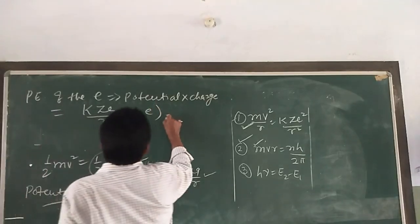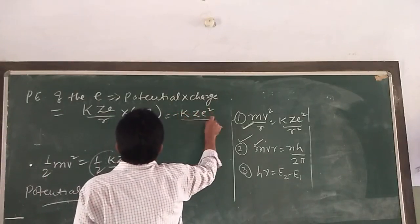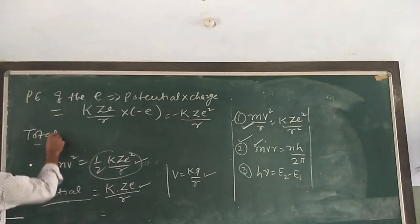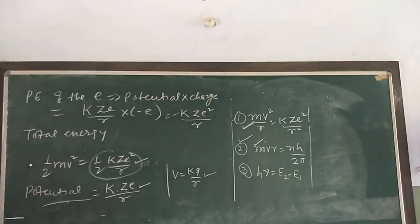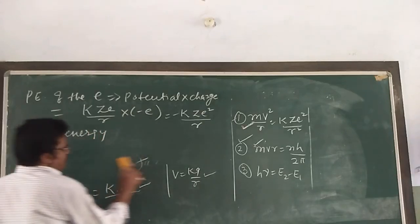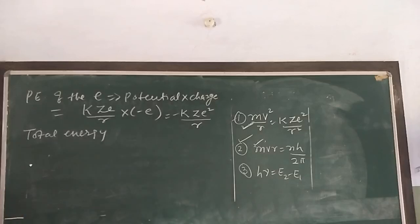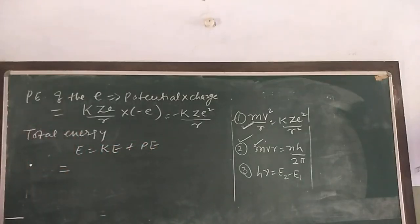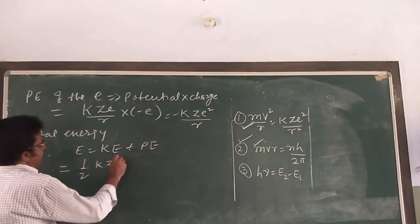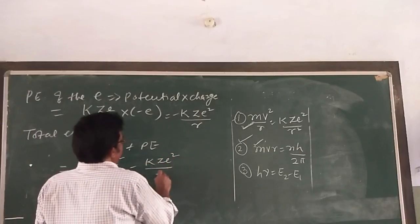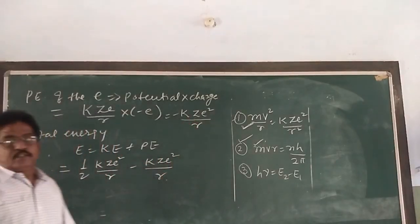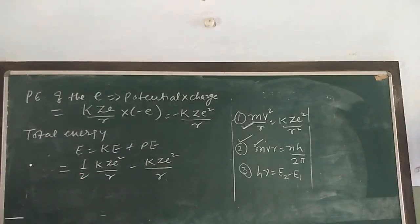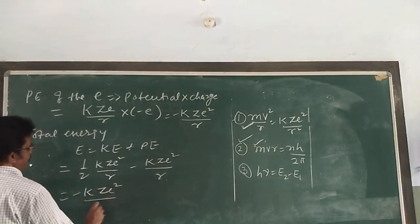The total energy of the electron is kinetic energy plus potential energy: E = (1/2)kze²/r + (−kze²/r) = −kze²/(2r). This is the total energy.